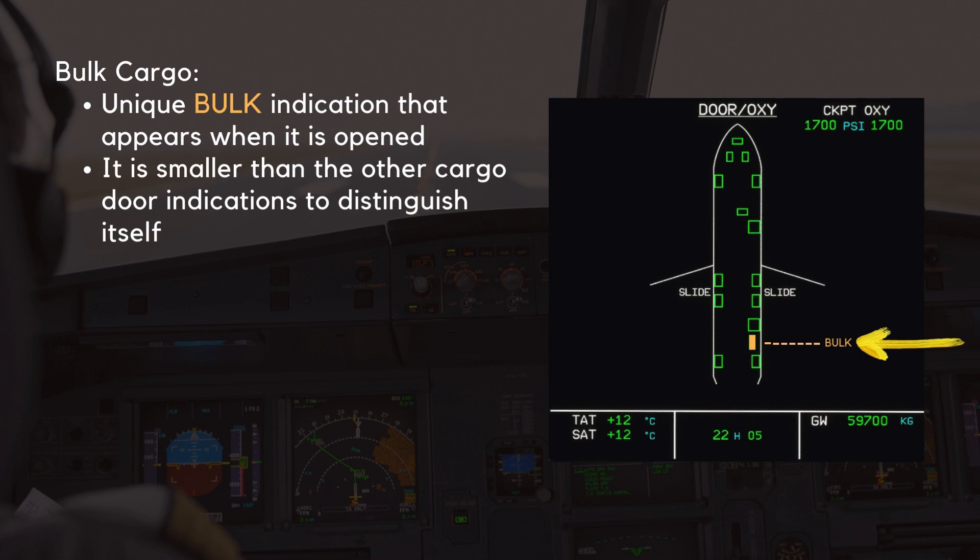The bulk cargo door has a unique bulk indication that appears when it is opened. It is smaller than the other cargo door indications to distinguish itself.